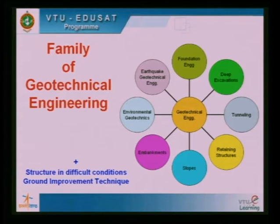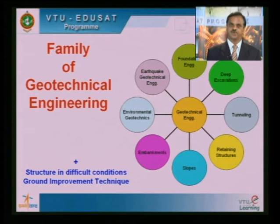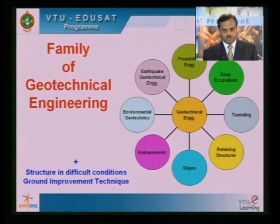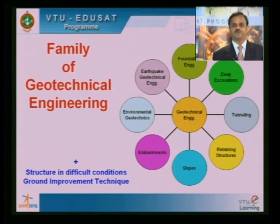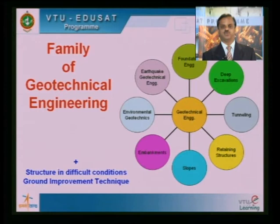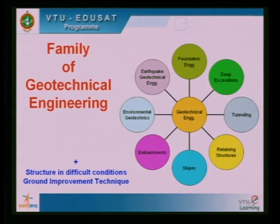Tunneling is required — we are going for metros in all our urban places, and good methodology of tunneling without troubling existing structures and buildings is important. Wherever you go for infrastructure, you require retaining walls. You have slopes which need to be assessed for stability. You need embankments for dams and highways. Environmental geotechnics, earthquake geotechnical engineering, and building structures under difficult situations — like expansive soils, marine clay, and highly compressible soils in Karnataka — all come under the family of geotechnical engineering. These days you cannot discard a site just because it is bad; you need to improve the ground.